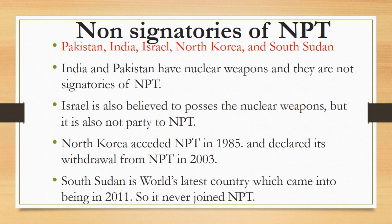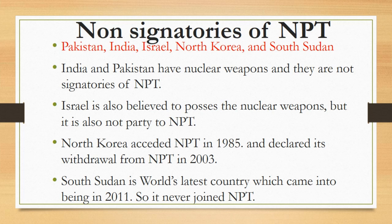Now, the non-signatories of NPT — the countries which did not sign the NPT and hence are not party to this treaty. These are five countries: Pakistan, India, Israel, North Korea, and South Sudan. India and Pakistan have nuclear weapons and are not signatories of NPT. They did not have nuclear weapons at the time of signing in 1968, but both rejected the offer to sign NPT due to their rivalry with each other and other reservations. They were both struggling to acquire nuclear power at that time and later achieved that goal in 1998. Had they signed the NPT, they could not have obtained this technology.